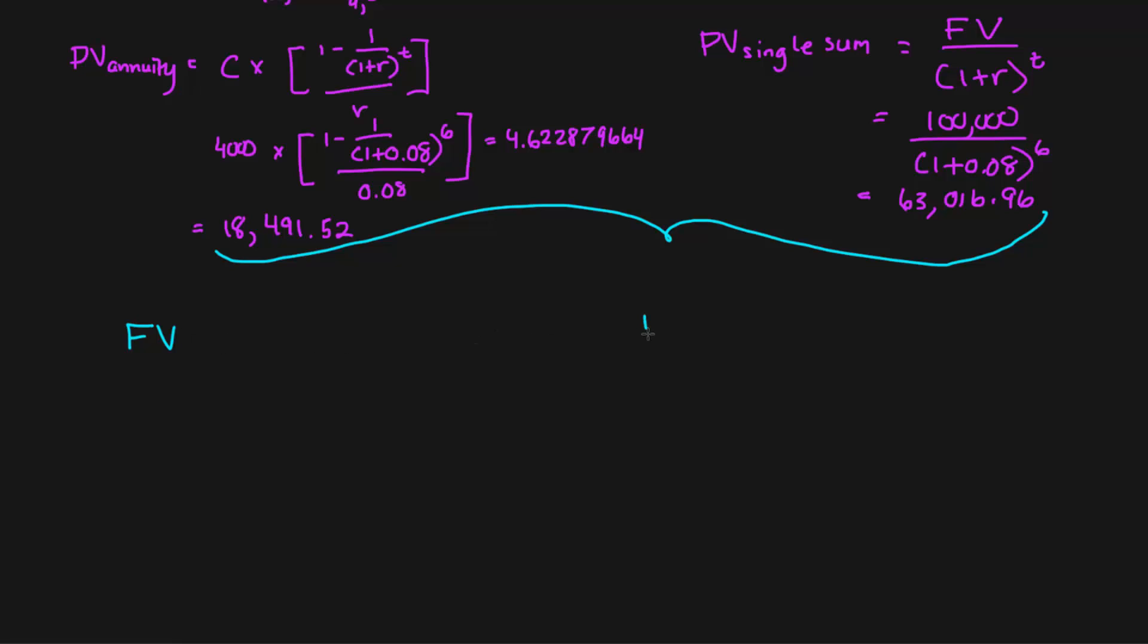but I should just say before we move on to the next video. So the face value is $100,000, which we know just from the question when it started off. And then we have the present value annuity is $18,491.52.